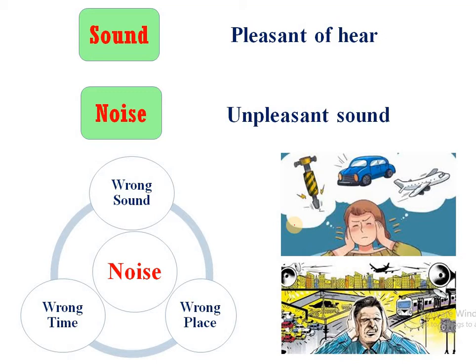But in a second condition, consider that you are very tired. You came home from your job or college and you want some peace. But your neighbor plays music and that sound becomes unpleasant — it creates irritation. Because at that time you needed rest. So the same sound was pleasant when you were happy, but irritating when you were tired. That is wrong place, wrong time, and wrong sound. So noise is not always about intensity — it is based on human tendency.